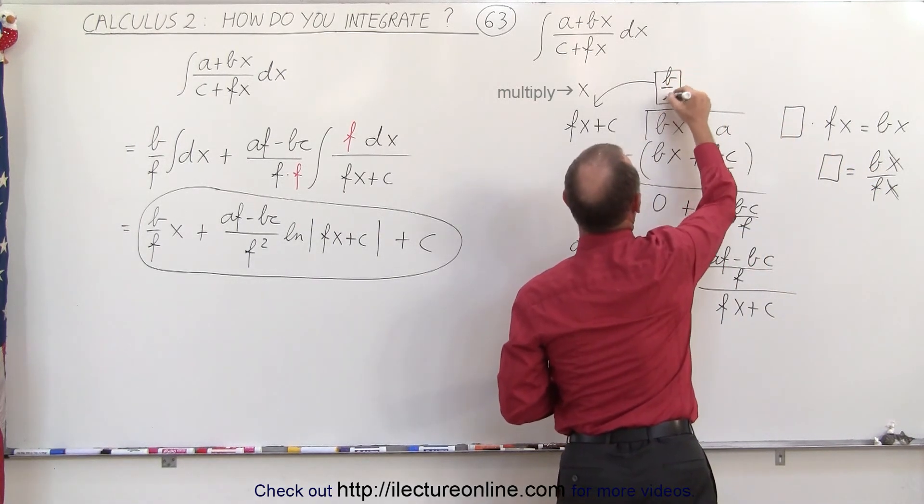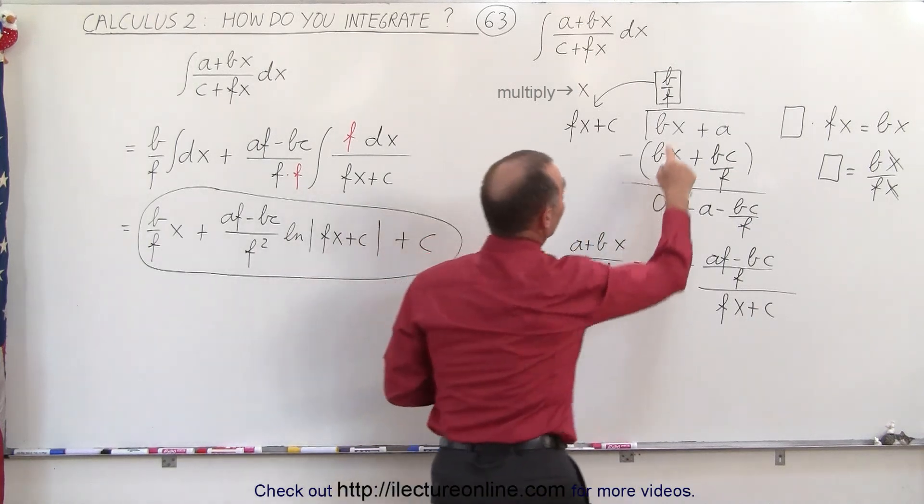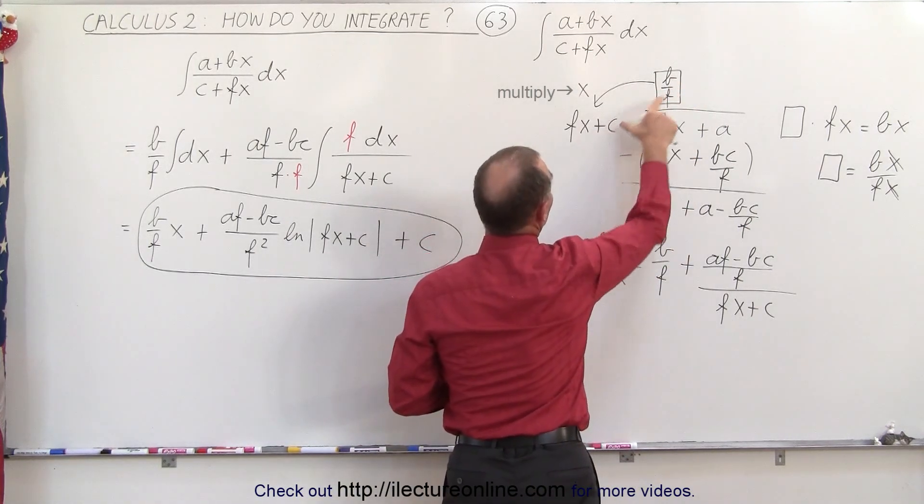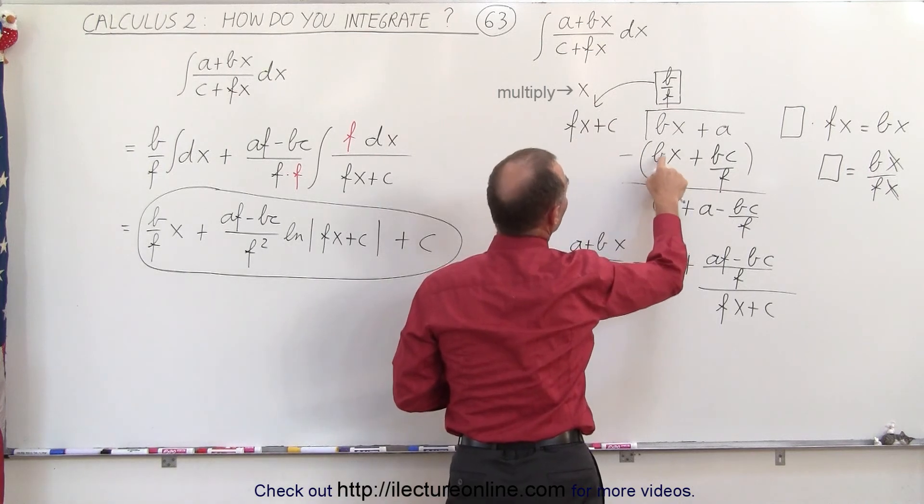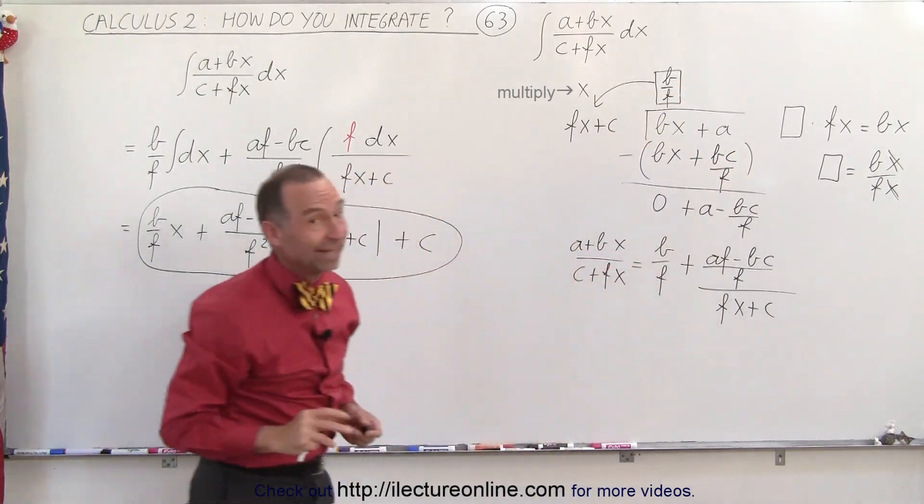And notice that it's sometimes kind of difficult to figure out, but now we multiply b over f times fx, the f's cancel, you end up with a bx, and bf times c gives us bc over f. And that's how it's done.